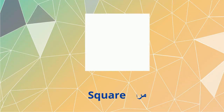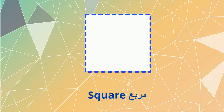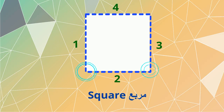What about this shape, kids? Good job! This is a square. A square is a flat shape. It has 4 equal sides and 4 right angles.